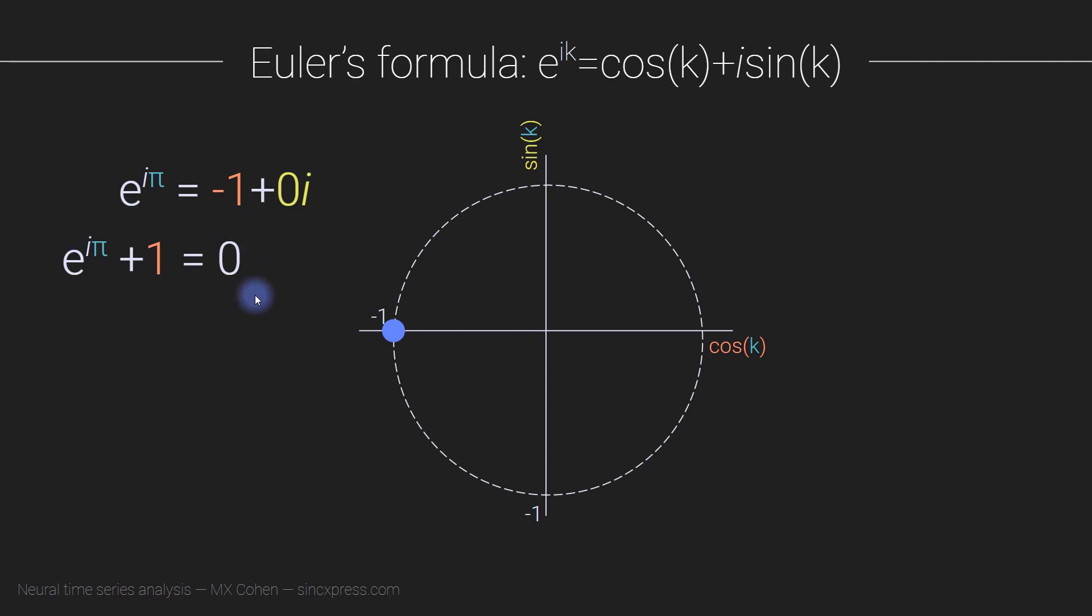So essentially, in this tiny, stupid little equation, well, I shouldn't call it stupid. But, you know, in this seemingly innocuous equation, we have all of the fundamental aspects of math and nothing extraneous, we have nothing extra. And that is why this is considered to be the most elegant mathematical equation in human civilization.